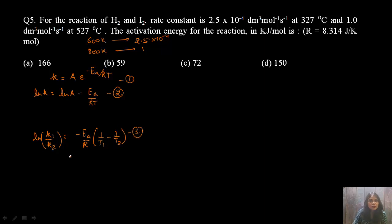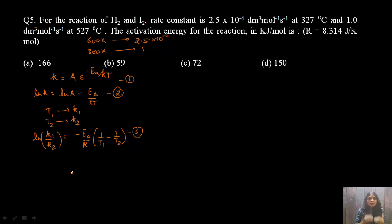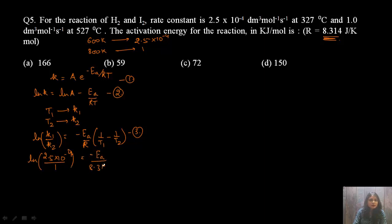Substituting values: ln(2.5 × 10⁻⁴ / 1) = −(Ea/8.314)(1/600 − 1/800). Solving this gives Ea ≈ 164.9 kJ/mol, so option A is the closest answer. Now consider a two-step reaction: reactant → intermediate → product. An energy diagram of energy vs. reaction progress shows two energy barriers.